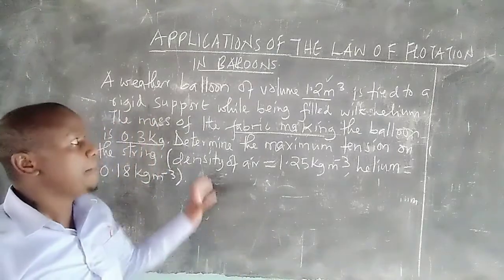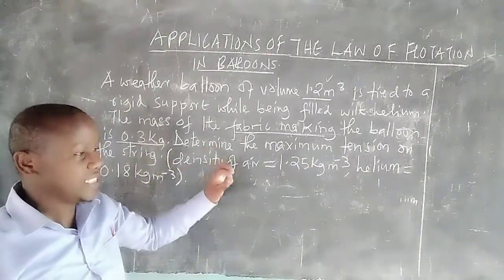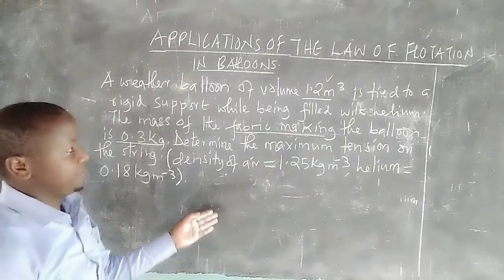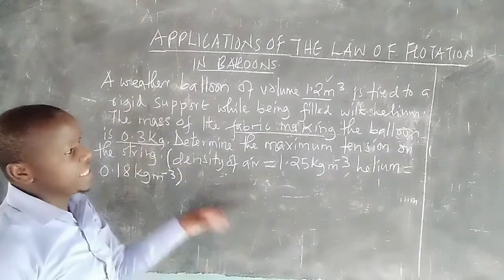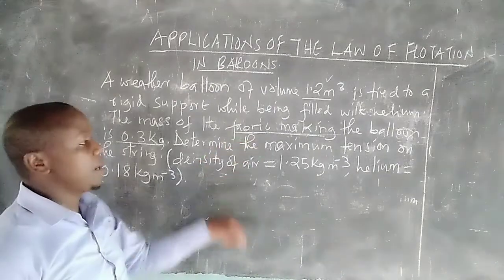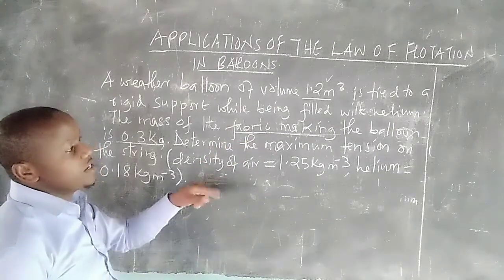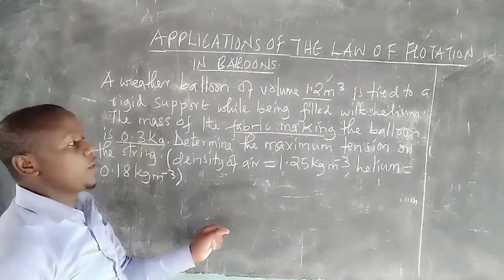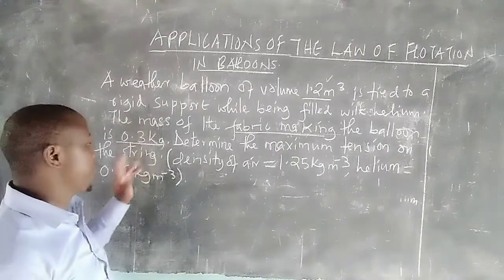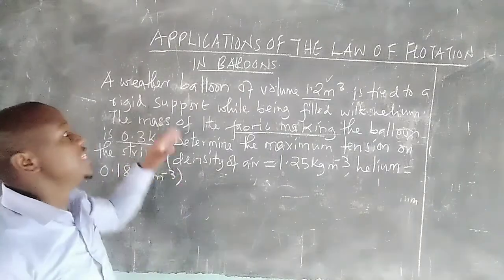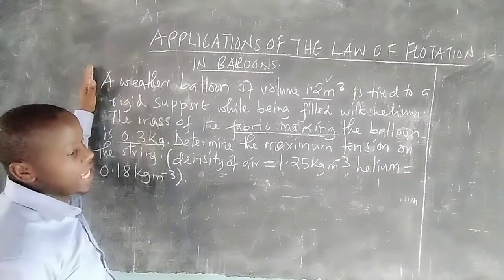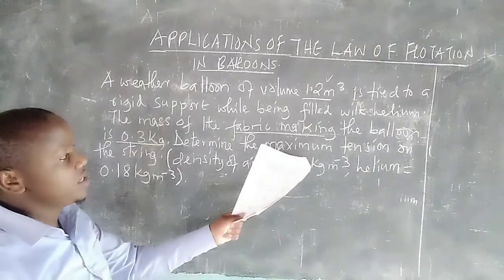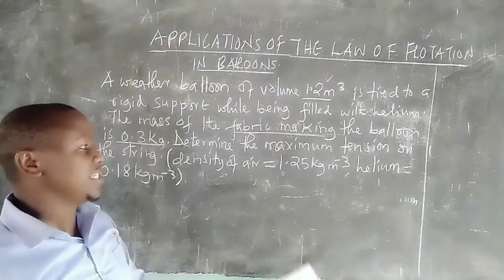As stated earlier, a balloon is filled with a gas of low density compared to air — in this case, helium. The weight of helium in the balloon and the fabric making the balloon result in a resultant force acting downwards. That weight acting downward must be less compared to the upthrust due to air, and that is why the balloon is able to fly upward.